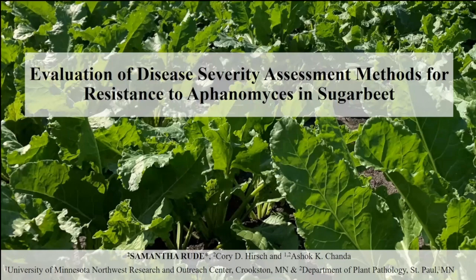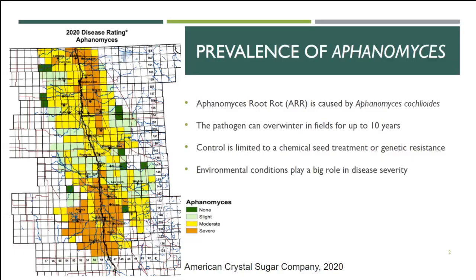I'm very pleased to be talking to you all today, doing the first plant pathology talk of the day. I'm talking about evaluating disease severity for Aphanomyces root rot of sugar beet. So a bit about Aphanomyces — I know it's a little bit less flashy than Cercospora. Aphanomyces root rot is caused by the pathogen known as Aphanomyces cochlioides, because we're very clever with naming in this system.